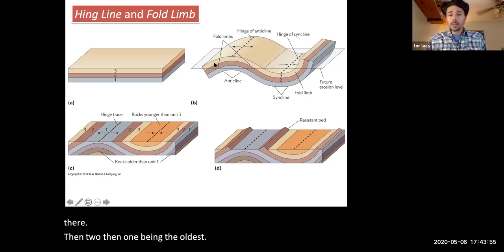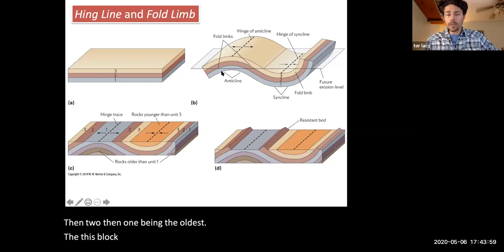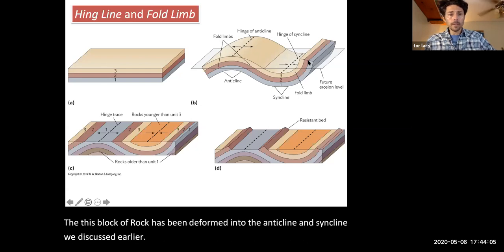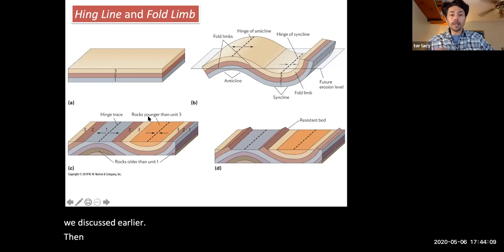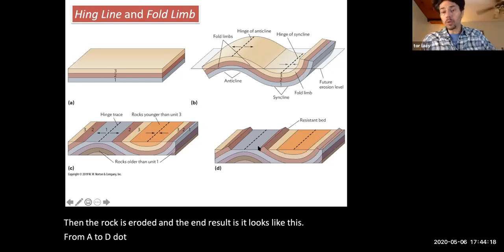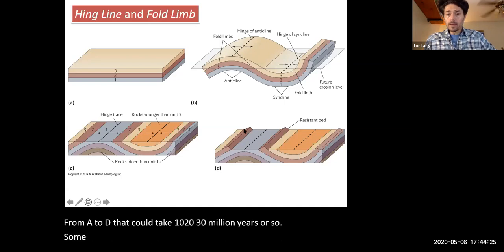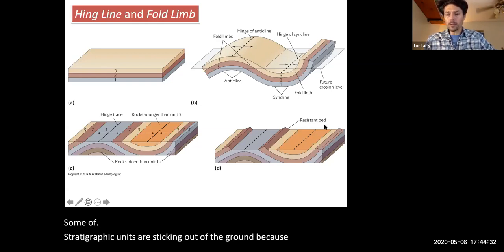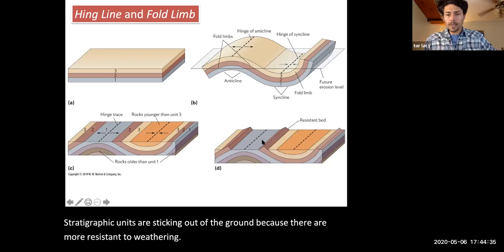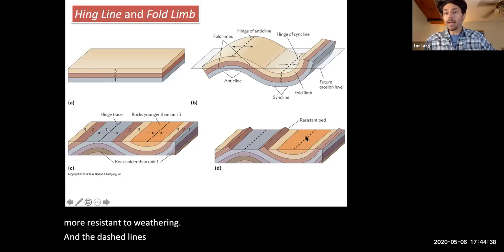Over time, this block of rock has been deformed into the anticline and syncline we discussed earlier. Then the rock is eroded and the end result is it looks like this. From A to D, that could take 10, 20, 30 million years or so. Some of the stratigraphic units are sticking out of the ground because they're more resistant to weathering.